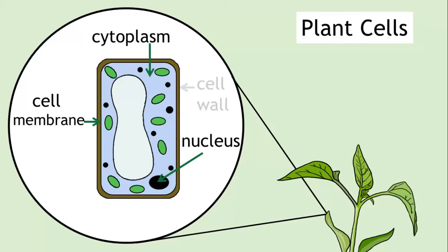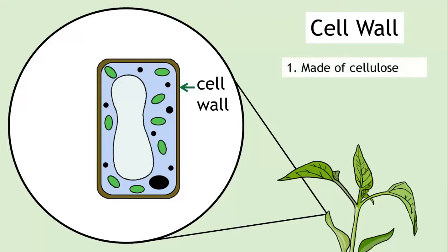For example, they contain a cell wall. A cell wall is made of cellulose, and this structure provides support for the shape of the cell.